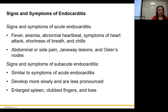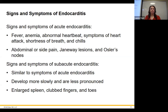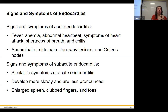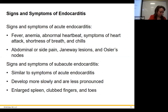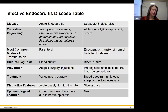A more chronic subacute version of endocarditis progresses slowly but can lead to an actually enlarged spleen visible on scans, and clubbed fingers and toes. Clubbed fingers are when the nails are curved down and rounded, making the whole finger look rounded — it's an indication of chronic health problems. Common causative bacteria include Staphylococcus, Streptococcus pyogenes or pneumoniae, Enterococcus species, and Pseudomonas aeruginosa. These bacteria are everywhere and cause all sorts of illness.